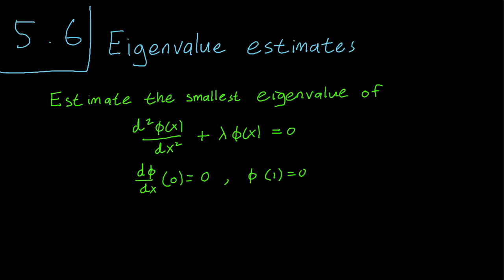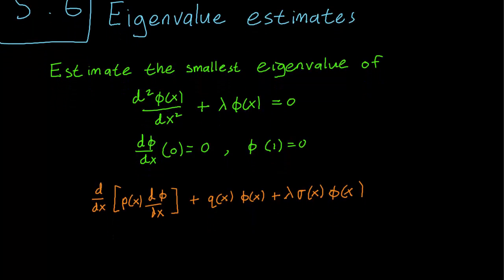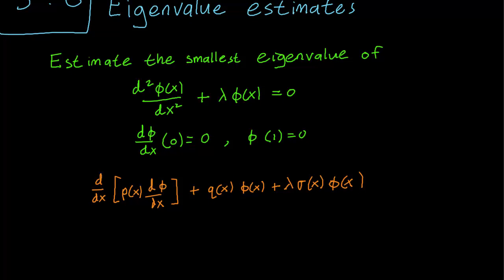We'll see how we can put the Rayleigh quotient to good use here. First, we're going to observe the full Sturm-Liouville equation written over here in brown. We need to figure out what the p, the q, and the sigma are. Just looking at our equation, it's clear that we have p(x) as just the constant function 1, q(x) as 0 (there's no φ(x) term by itself), and σ(x) as 1.